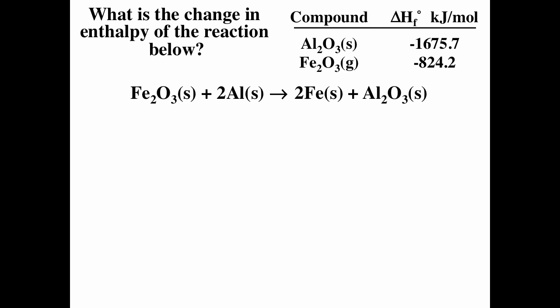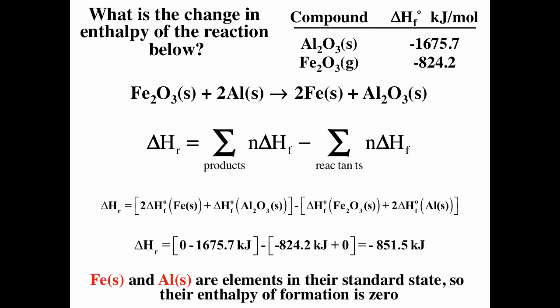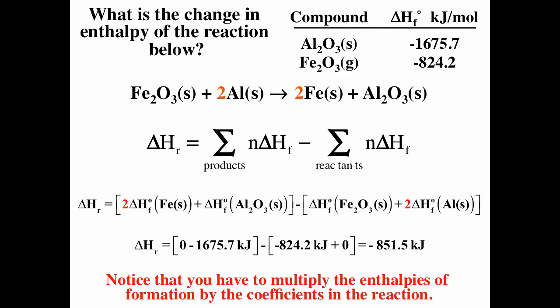For the thermite reaction — iron oxide plus aluminum going to iron metal plus aluminum oxide — we have the enthalpies of formation listed. We calculate delta H as products minus reactants. We multiply the enthalpy of iron by two, include aluminum oxide, iron oxide, and two aluminum. Iron solid and aluminum metal are elements in standard state, so their enthalpies of formation are zero. The result is delta H equals negative 851.5 kilojoules — a very exothermic reaction. Remember to multiply enthalpies of formation by the stoichiometric coefficients.